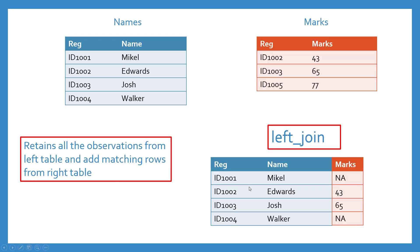I'll explain the left join and then we'll move to R to work with that. What left join does is it retains all the observations from the left table — which is the names table — and adds the matching rows from the right-hand table, which is the marks table. If we look at the resultant data frame, we see that we had four students in the names data frame, so we retain all four individuals from the left table.